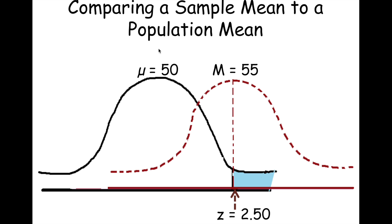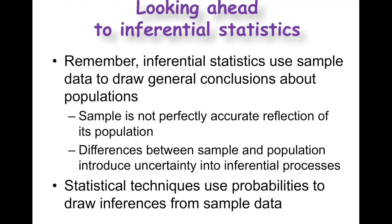Inferential statistics uses sample data to draw general conclusions for the population from the samples we ran studies on. A sample is not a perfectly accurate reflection of the population — it's going to vary. Each sample is different, and the differences between the sample and the population reflect sampling error. One technique we use in statistics is probability, and through probability we can help draw inferences from sample data.